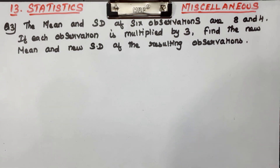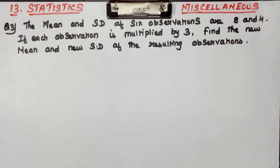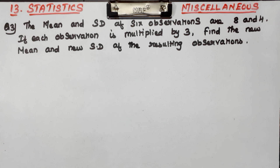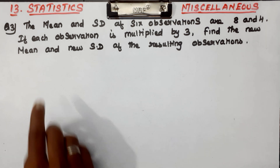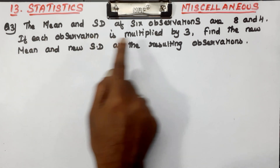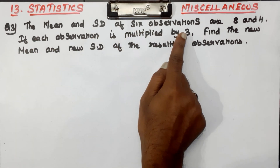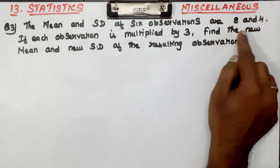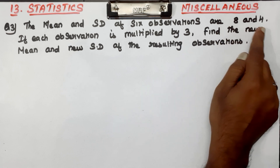Hello students. What are we going to talk about in this video? Chapter number 13, Statistics, Miscellaneous sums. Question number 3: The mean and standard deviation of 6 observations are 8 and 4.